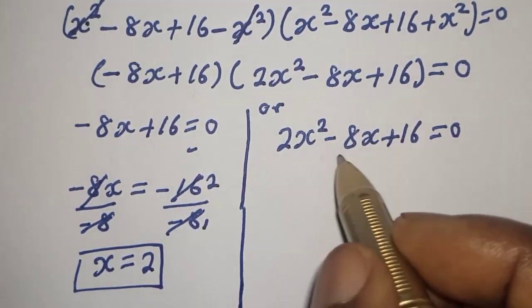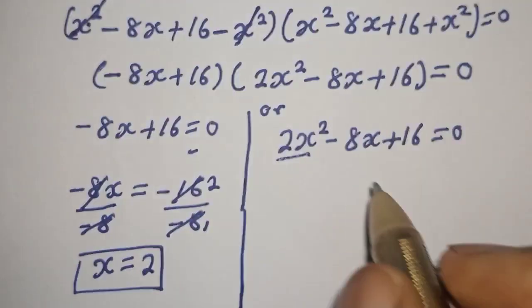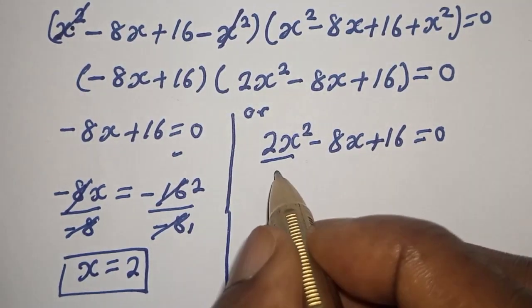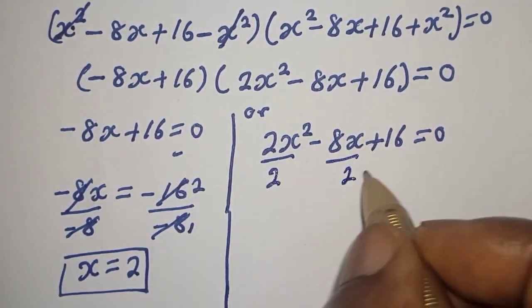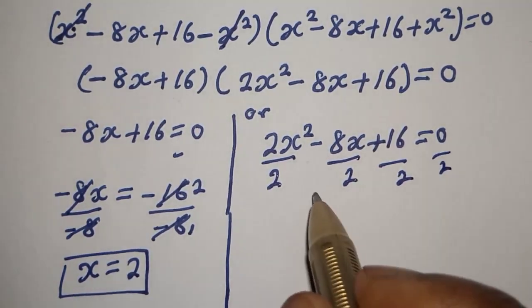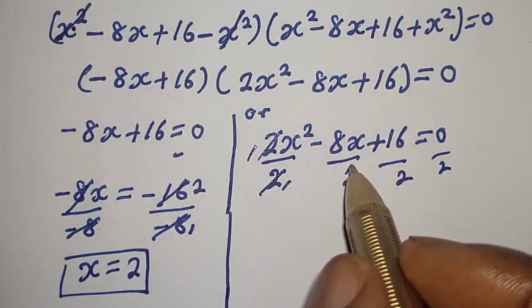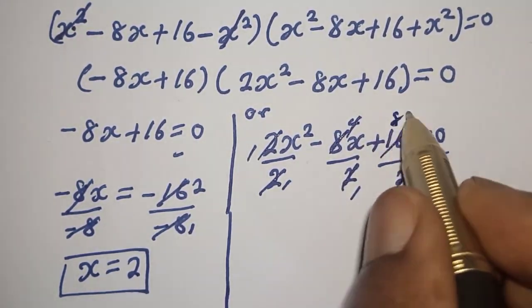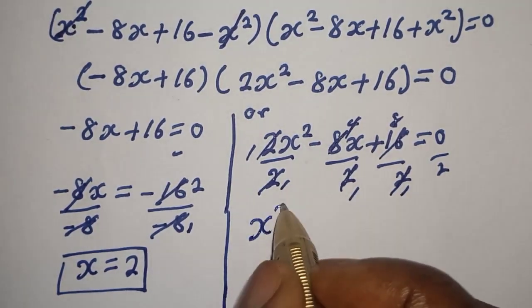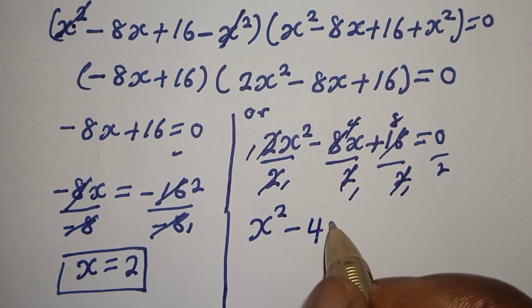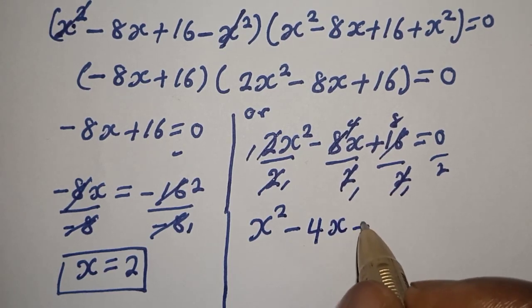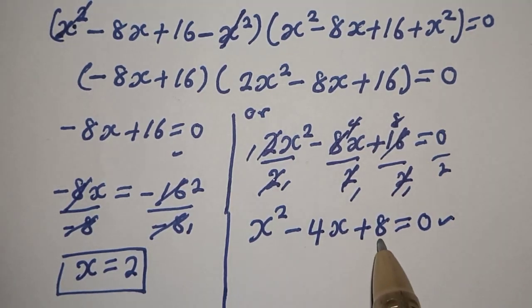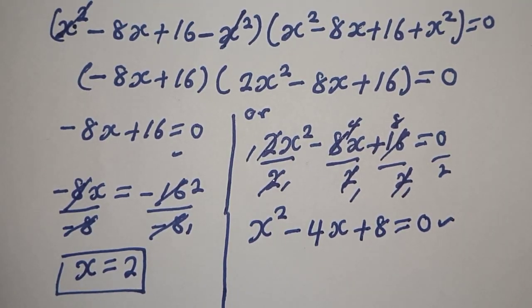For Case 2, we reduce by dividing all terms by 2, giving s squared minus 4s plus 8 equals 0. This is a quadratic equation in its reduced form.